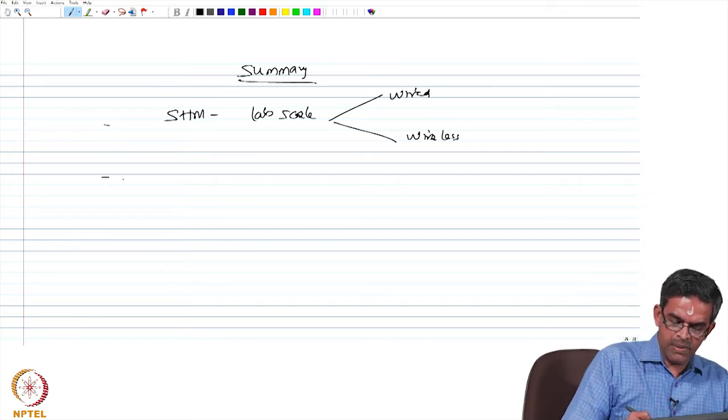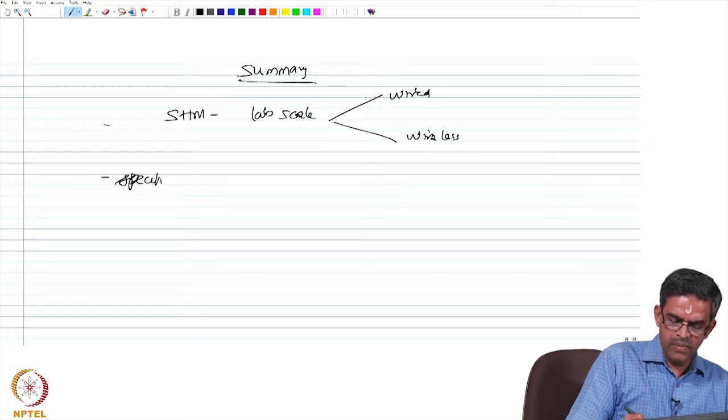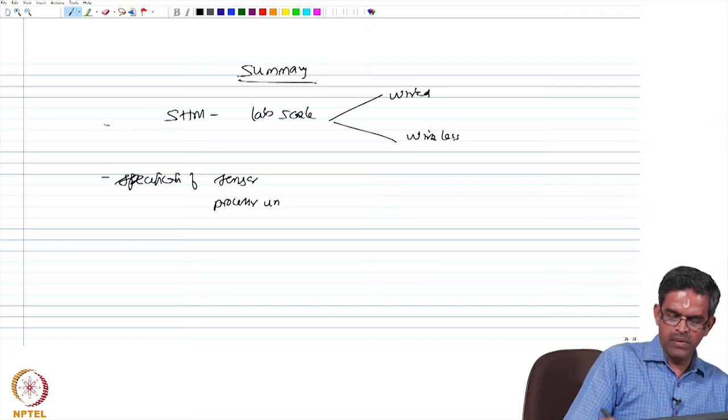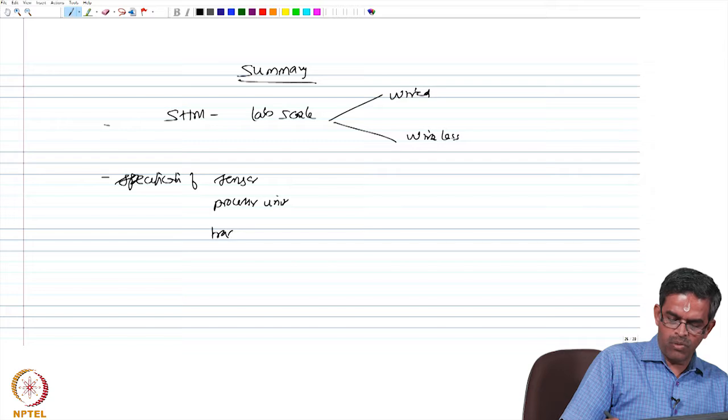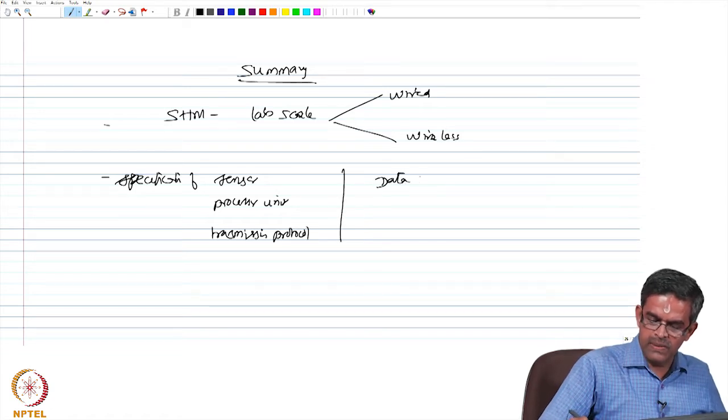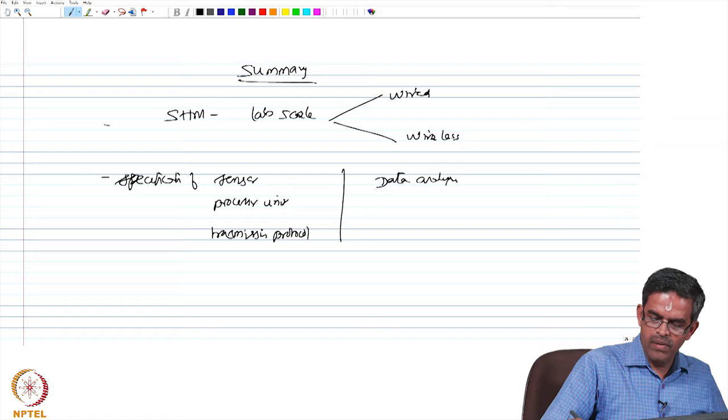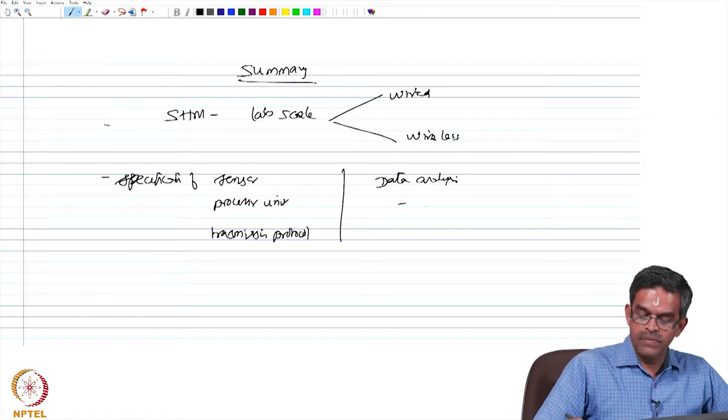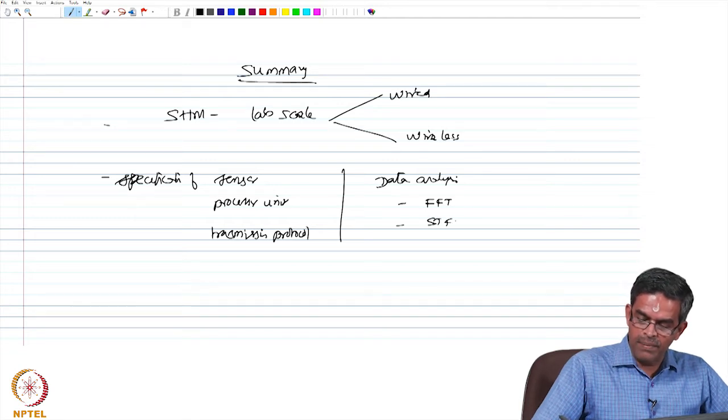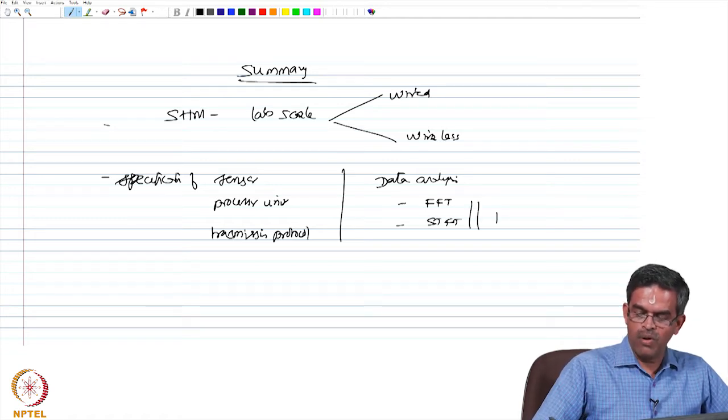We have discussed the specification of the sensors, processor unit, transmission protocol, and we have also seen in detail about the data analysis to check the damage identification and the time localization of the damage for post processing.